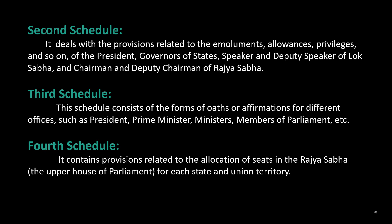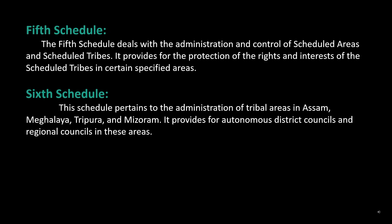3rd Schedule: This schedule consists of the forms of oaths or affirmations for different offices, such as President, Prime Minister, Ministers, Members of Parliament, etc. 4th Schedule: It contains provisions related to the allocation of seats in the Rajya Sabha, the Upper House of Parliament, for each state and union territory.